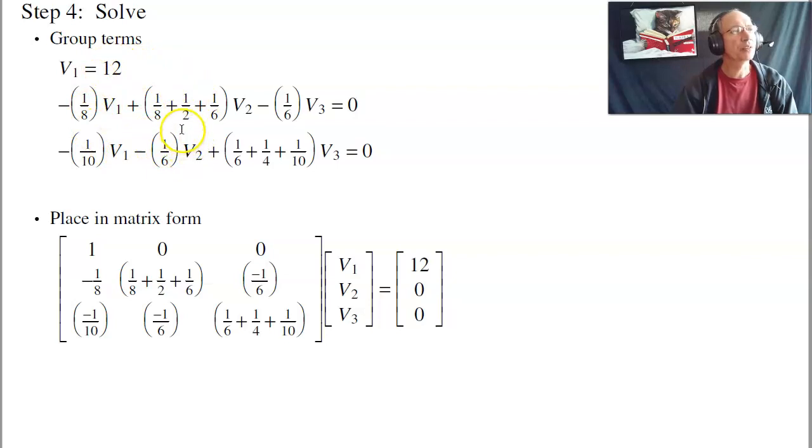I've got three equations, three unknowns. They're grouped. To solve, throw this in MATLAB. To do that, put this in matrix form. The first equation says that this first column is times V1. V1 plus zero V2 plus zero V3 is 12. The second equation says minus one-eighth V1 plus one-eighth plus one-half plus one-sixth V2 minus one-sixth V3 is zero.